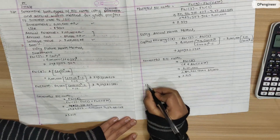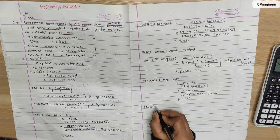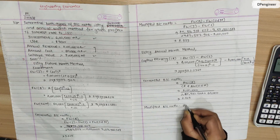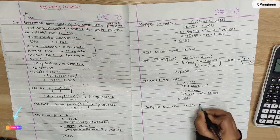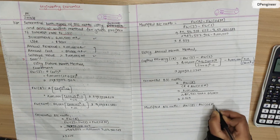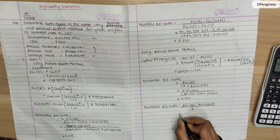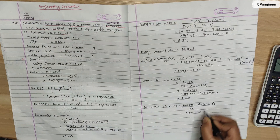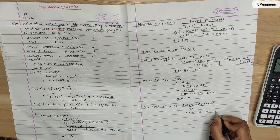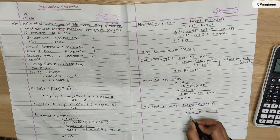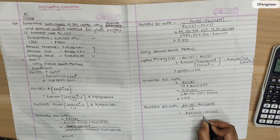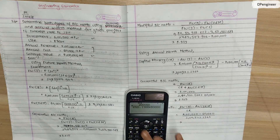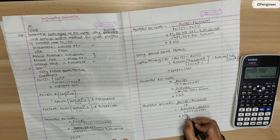Using the modified method with annual worth: the modified benefit-cost ratio formula is annual worth benefit minus annual worth operation and maintenance, divided by capital recovery. That is (2,00,000 minus 60,000) divided by 1,04,521.1366, which calculates to 1.339.